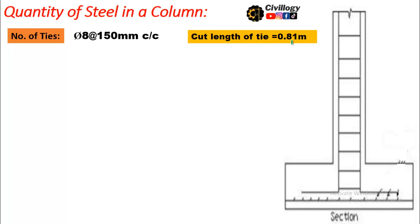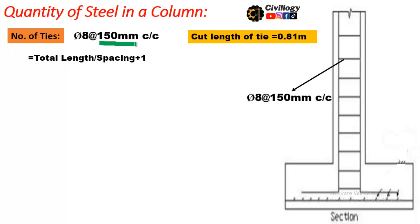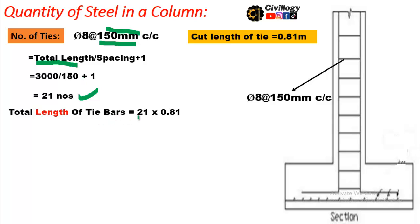The cut length of a single tie is 0.81 meters. Stirrups are provided at 150 mm center to center. Using the formula — total height of column divided by spacing — the number of ties is 21. Therefore the total length of tie bars equals 21 times 0.81, which is approximately 17 meters of 8 mm diameter bar required to make all ties for this column.